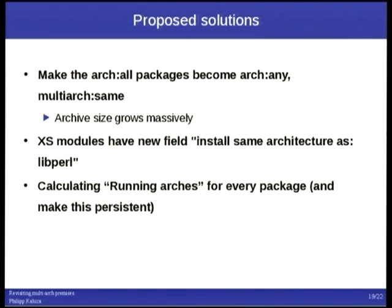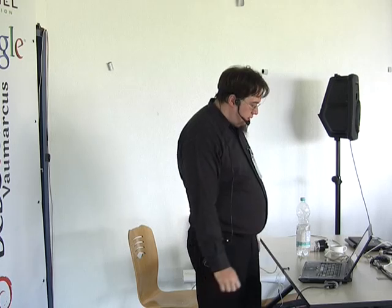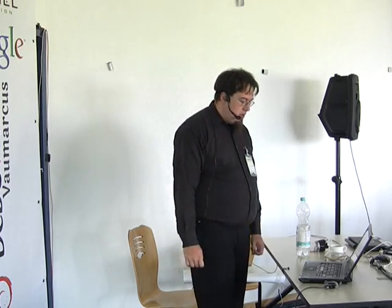Then from Helmut's proposal: calculating a set of 'running architectures' for every package, even arch-all packages. Go through the dependency trees and for each package look at for which of the possible architectures all dependencies are cleanly satisfied, and store that persistently so that even with a cyclic graph you can still do this calculation. That is rather a big change but I think this, or something like it, is probably what we'll have to do in the long run.